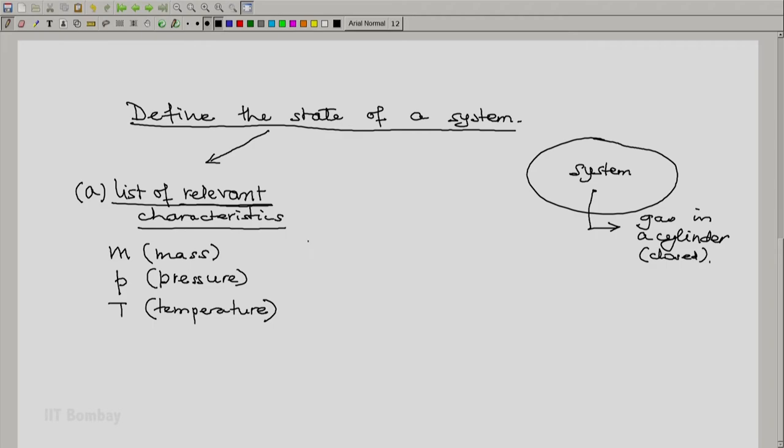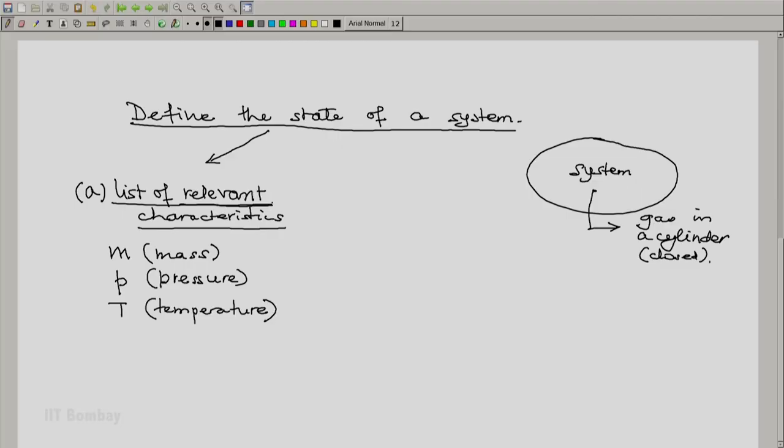For example, if this is a rigid cylinder and if there are going to be no significant variations in temperature and pressure, we will say that the volume is unlikely to change. And hence, volume may not be listed as a relevant characteristic in this particular case.